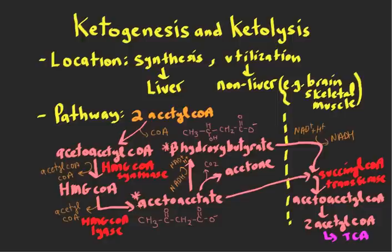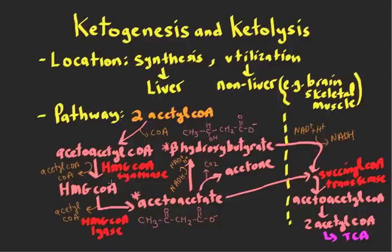HMG-CoA synthase may look familiar from cholesterol biosynthesis. That process also occurs in the liver but in the cytosol, where there's another version of HMG-CoA synthase and an HMG-CoA pool. The key difference is that HMG-CoA made in the mitochondria is used for ketone body synthesis, while HMG-CoA in the cytosol is used for cholesterol synthesis via a different enzyme called HMG-CoA reductase. HMG-CoA lyase is the key mitochondrial enzyme that makes acetoacetate, which can then be converted to beta-hydroxybutyrate or acetone — an important compartmentalization to note.